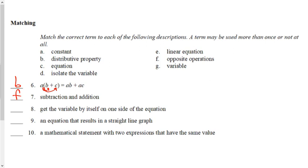Get the variable by itself on one side of the equation is to isolate the variable, D. Of course, isolating the variable is getting it by itself. An equation that results in a straight line graph is a linear equation. Of course, back in grade 8, when you graph out these things and they form lines, the graph is called a linear equation. And finally, a mathematical statement with two expressions that have the same value is simply an equation.